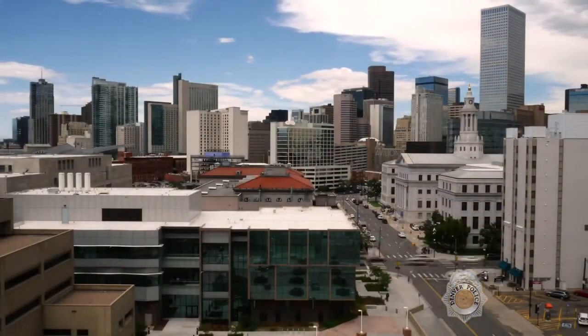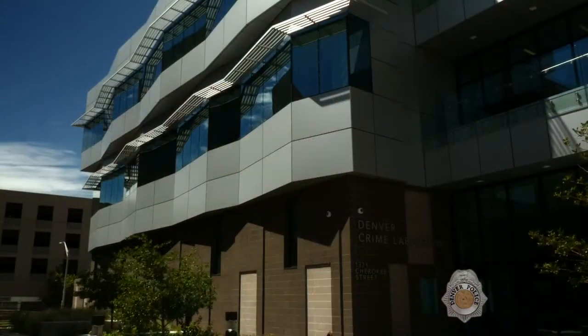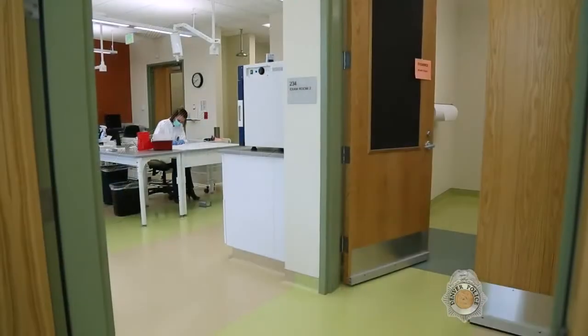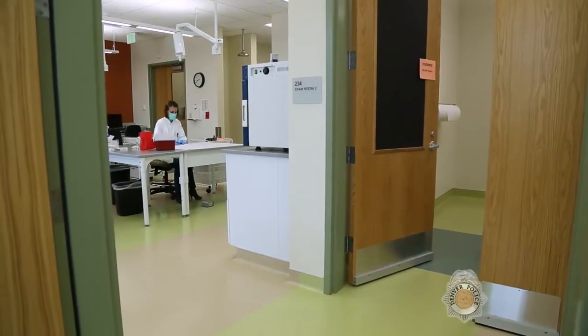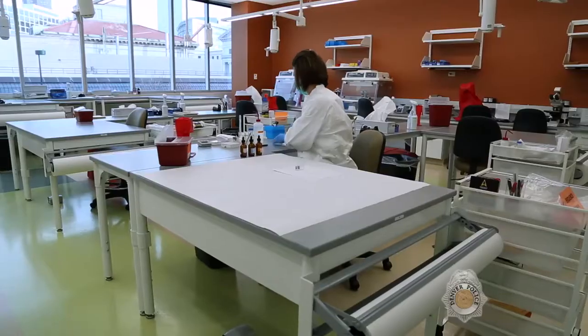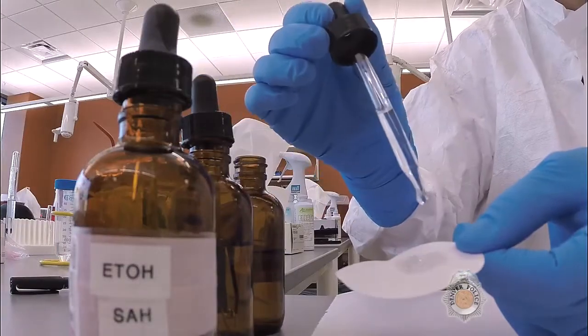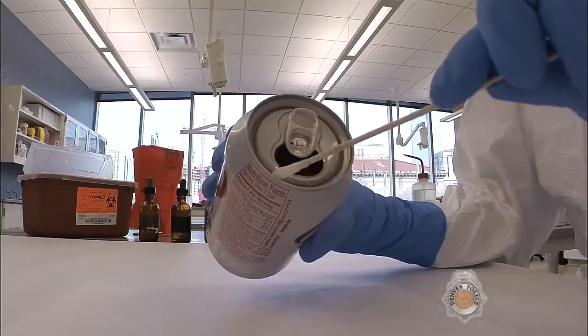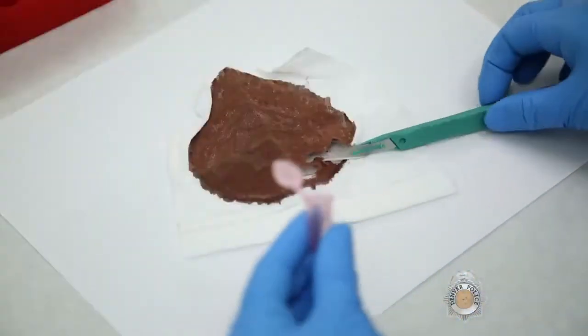The Forensic Biology and DNA Unit occupies the entire second floor of the Denver Police Crime Laboratory. The Forensic Biology Unit examines evidence recovered from crime scenes for potential biological matter. They identify biological fluids, then take swabs or cuttings from the evidence and process them for analysis.